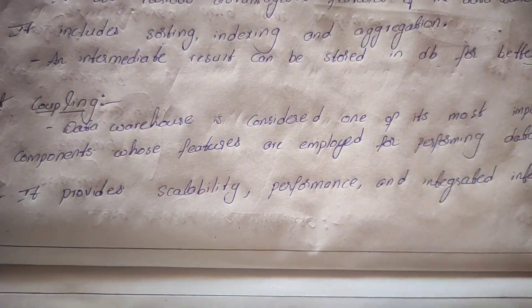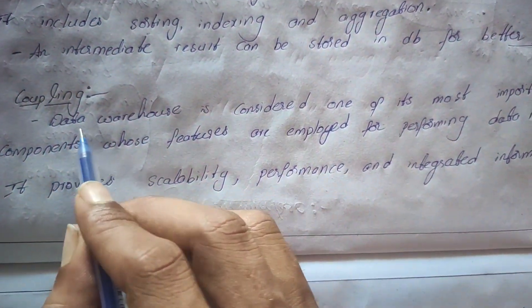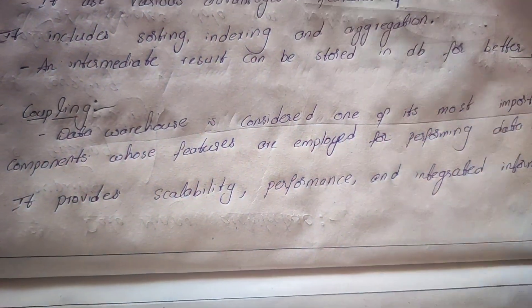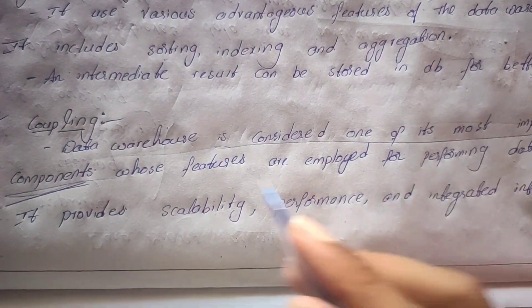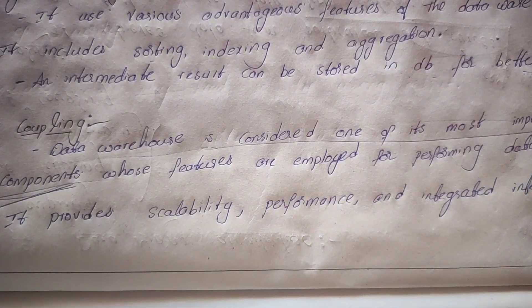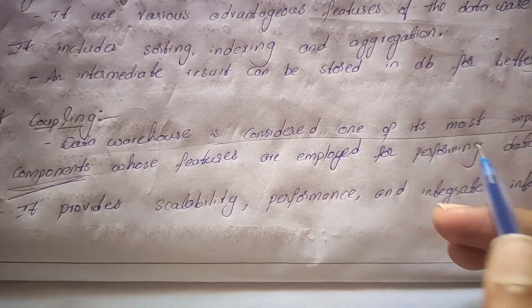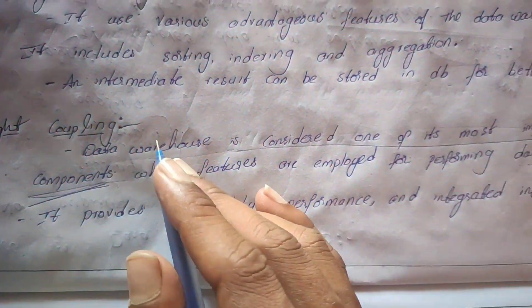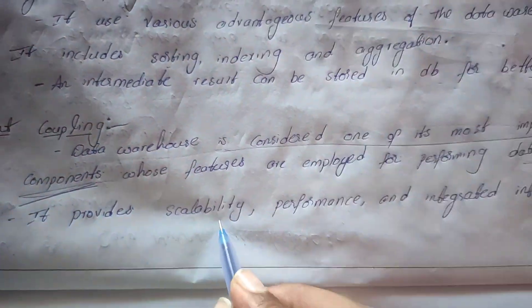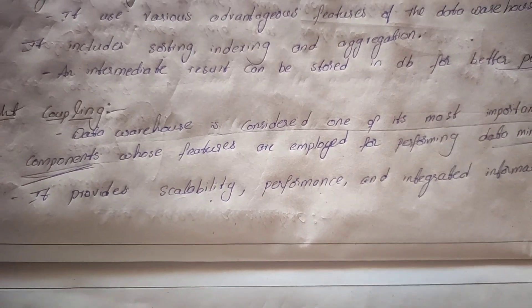Next, tight coupling architecture. In tight coupling architecture, the data warehouse is considered the most important component, whose features are employed for performing data mining tasks. This architecture provides scalability, performance, and integrated information.